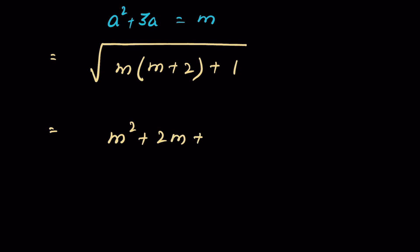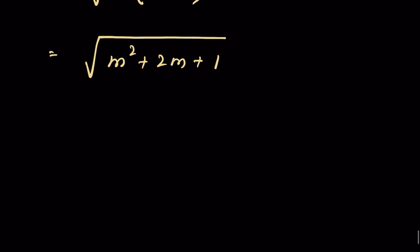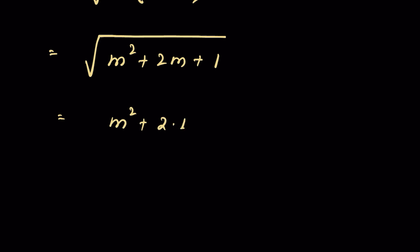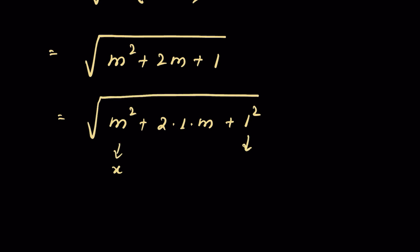Multiplying out gives m squared plus 2m plus 1 under square root. This is in the form of m squared plus 2 times 1 times m plus 1 squared under square root. If m is x and 1 is y, then it is x squared plus 2xy plus y squared.